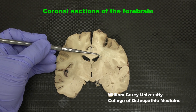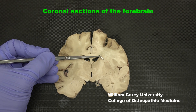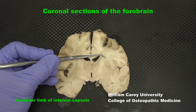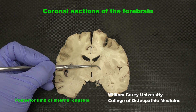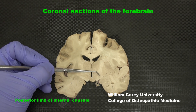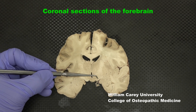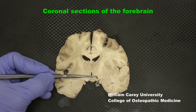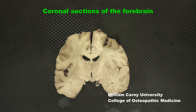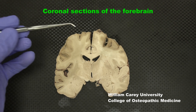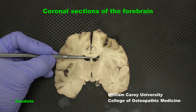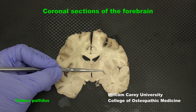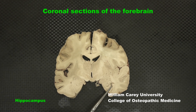As far as the internal capsule is concerned, we are looking at the posterior limb, as indicated here. This is the posterior limb of the internal capsule, which will be caudally continuous with the cerebral peduncle, eventually approaching the midbrain. Also visible are the body of the caudate, putamen, globus pallidus, and hippocampus.